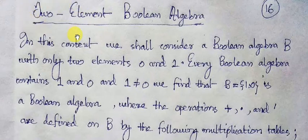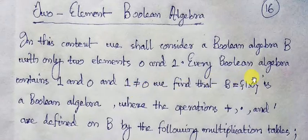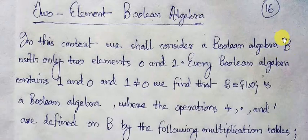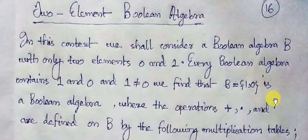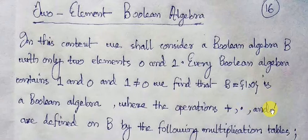Till our previous class, we have denoted a Boolean algebra by the four-tuple B, plus, dot, complementation, where B is a non-empty set, and plus and dot are two binary operations, and complementation is a unary operation.